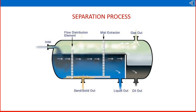A separator is a mechanical equipment — a mechanical vessel. The inlet receives a crude oil mixture of oil, gas, and water. It separates them by gravity and pressure difference into gas, oil, and water. We will study the separation process and the production separator in detail.